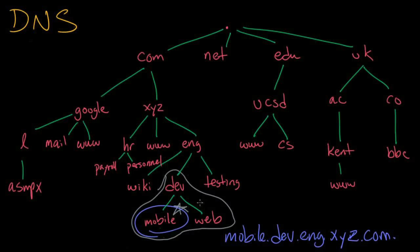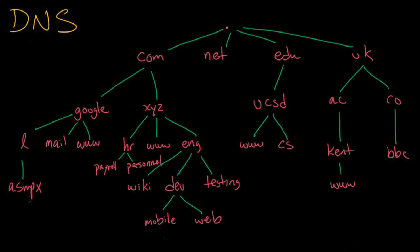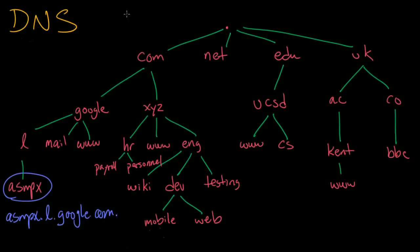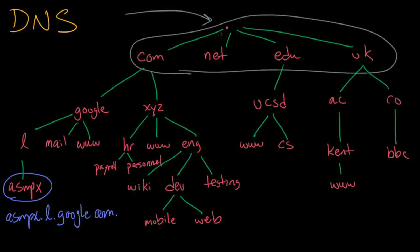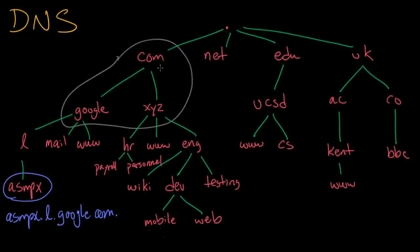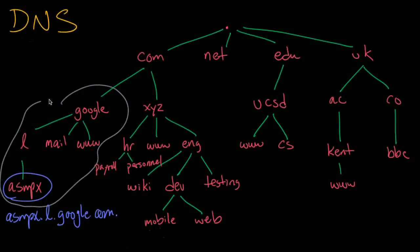This answer is then sent back to whatever computer was issuing the request. Let's look at another example. Perhaps someone is looking for asmpx.l.google.com. Once again, the query comes in at the top and hits the root zone. The root zone hands off the query to the com zone. The com name server hands off the query to the google.com zone, which includes this entire piece over here, and the answer is found right away. This answer is then sent back to whatever computer was issuing the request.